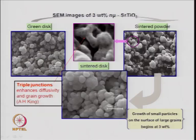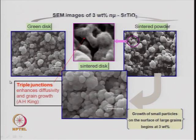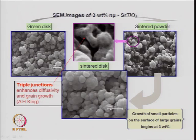Enhancement in diffusivity and grain growth corresponds to the presence of triple junctions, as worked out theoretically by Alan King. Looking closely at the microstructure, you can see large grains with smaller particles growing on their surfaces at specific compositions — particularly at 3 weight percent of nano SrTiO₃ dopant.